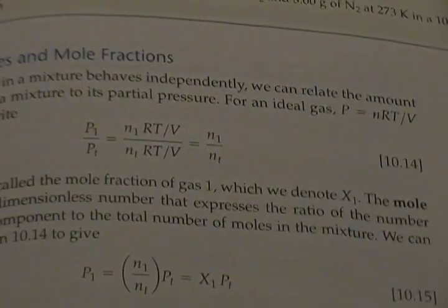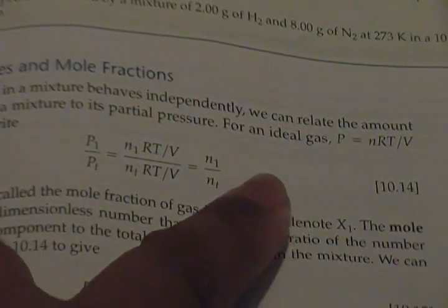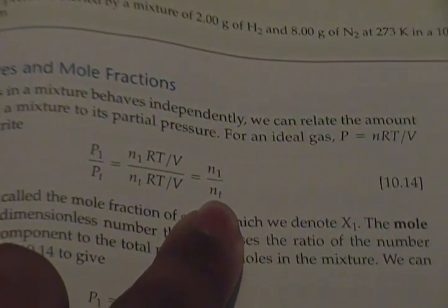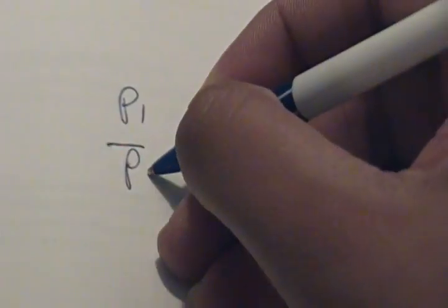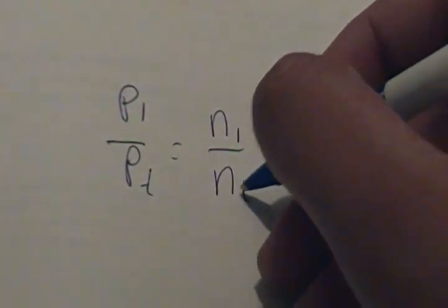Okay, so I found this equation in the book: p1 over the total pressure is equal to n1 over the total number of moles. So it'll be p1 over pt equals n1 over n2.